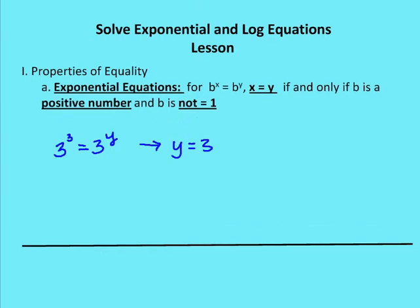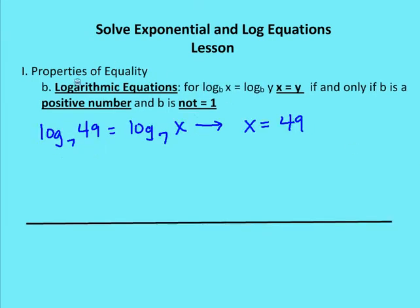The next property of equality is for log equations. So log base seven of 49 is equal to log base seven of x. In this case, x needs to be 49. Seven squared is equal to 49, so if I rewrite this in exponential form or evaluate this log, it equals two. In the same way, to make the log expression equal to two with base seven, x must be 49. This holds if and only if b is positive and b is not equal to one.